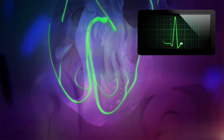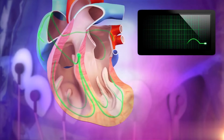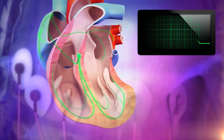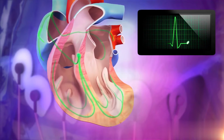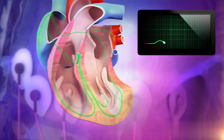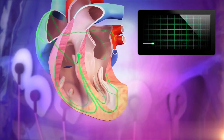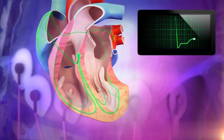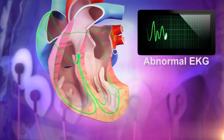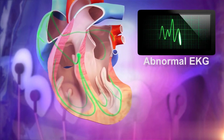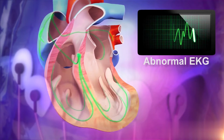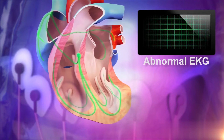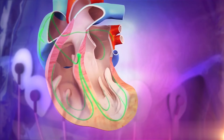During this rhythm disturbance, the normal coordinated contractions between the atria and ventricles become compromised, interfering with the heart's ability to efficiently deliver blood to the body. In people who experience atrial fibrillation, many rapid electrical impulses originating from different areas of the heart are sent to the atria, causing a very fast and chaotic rhythm. Because of this rhythm, the contractions of the atria become erratic.